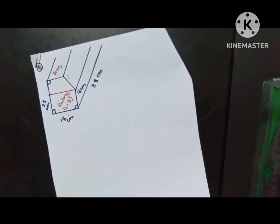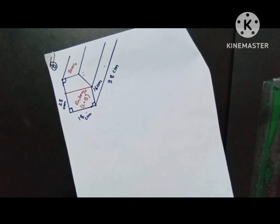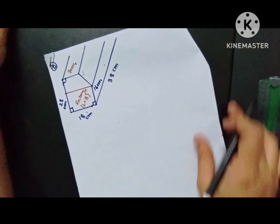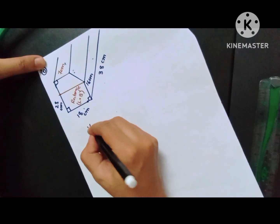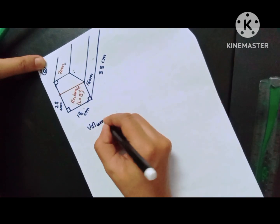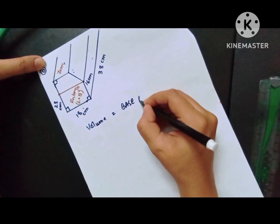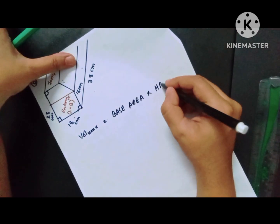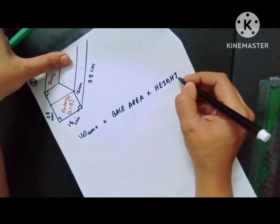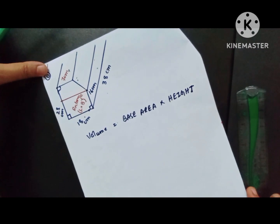Now we are starting part B of question number 1 of exercise 14B, and that is a prism. They are asking to find the volume of the given prism. The volume of the prism is equal to base area multiplied by height. So now we have to identify which one is the base area and where we have the height of the given prism.